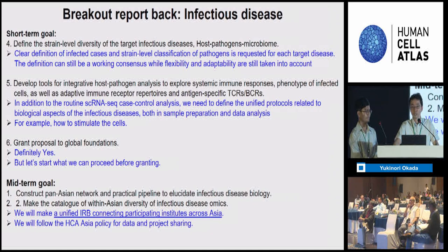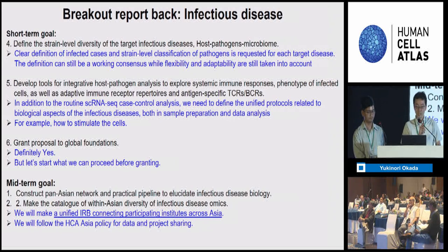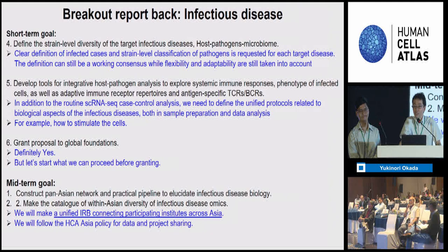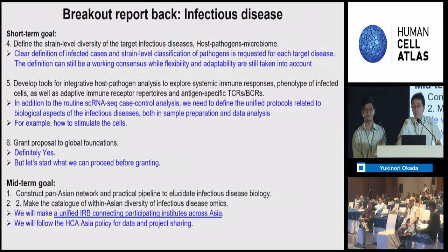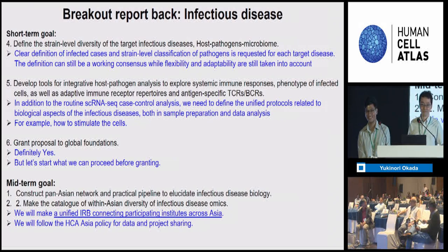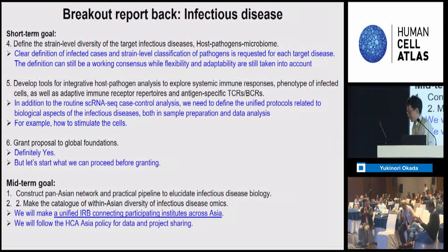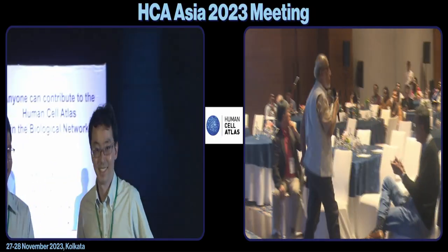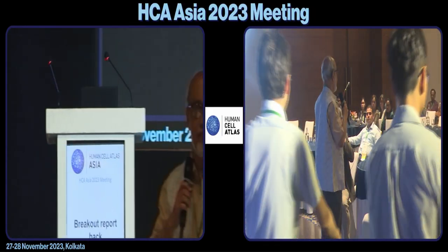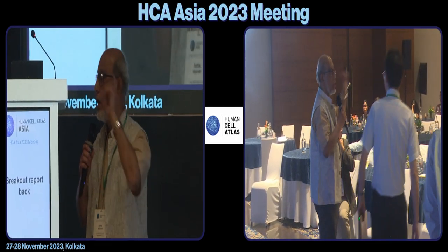Regarding grant proposals, we definitely need them, but if we strongly stick only to getting grants, nothing starts. We can start what we can do now and in parallel look for grants. What is also important is making a unified IRB connecting particular issues across Asia. This is truly important if we want to make a scheme that can quickly assess newly emerging infectious diseases. The goal of our consortium is to make this kind of global network, following Asia policy and data and project sharing.